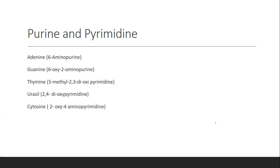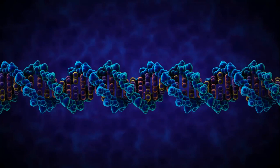The names of purines and pyrimidines: adenine is 6-aminopurine; guanine is 2-amino-6-oxypurine. Uracil is 2,4-dioxypyrimidine; thymine is 2,4-dioxypyrimidine with an additional 5-methyl group. Cytosine is 2-oxy-4-aminopyrimidine. Thymine differs from uracil only by the methyl group on carbon five.